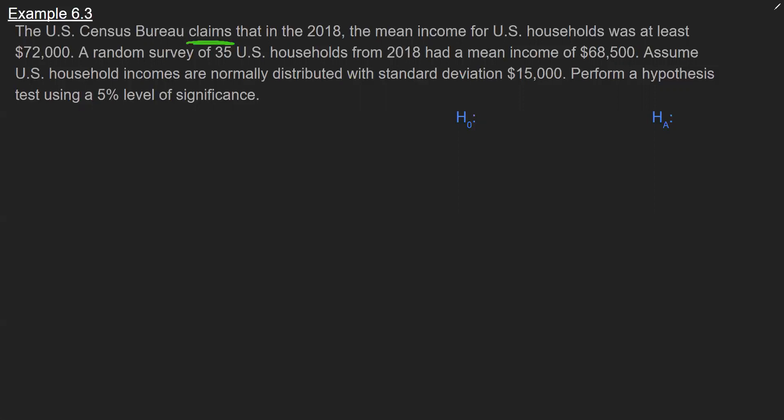Now next up is what's our parameter? Well the parameter here is mean income for U.S. households. So that is mu, and the language there is usually very straightforward. The word mean or the word average will represent that, and then the next part is actually going to identify for us how to set up our hypotheses.